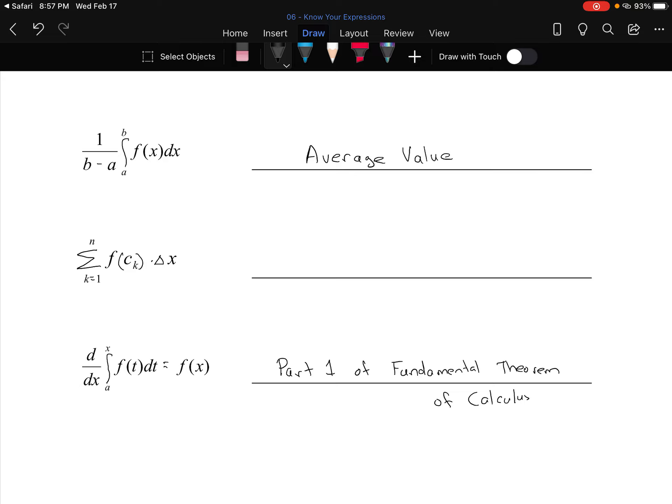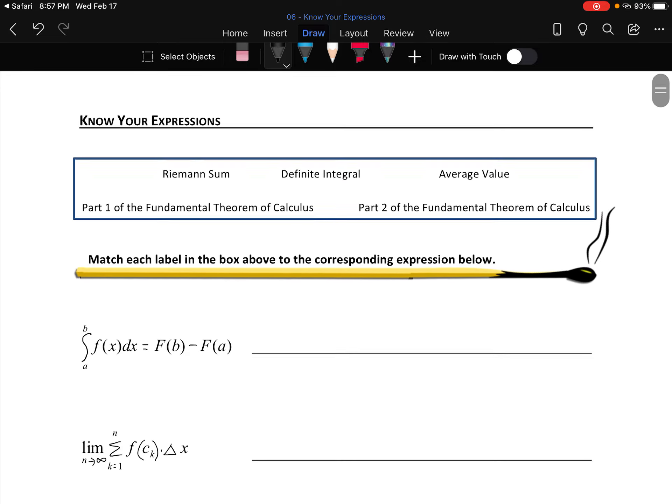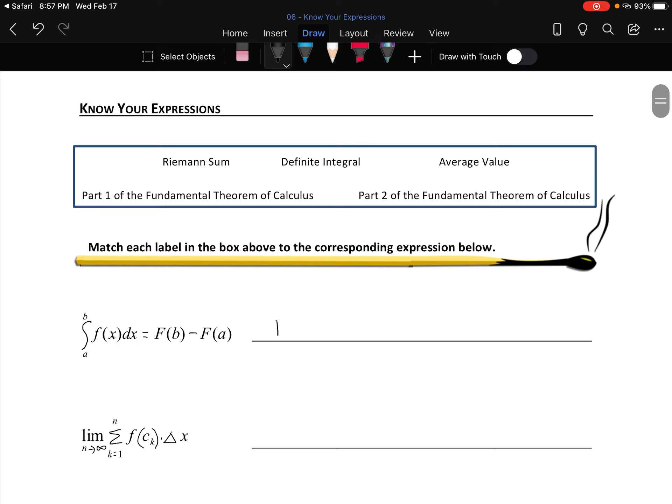So that leaves this one up here as the fundamental theorem of calculus part two. That one says if you want to find the integral of f(x)dx, you find the antiderivative and evaluate it at b and subtract the antiderivative evaluated at a.